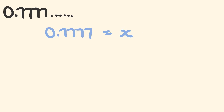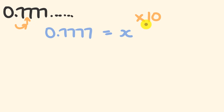The next thing we do is we look for where the first repeat occurs in our decimal. As you can see, the first repeat occurs between the first and the second seven — we have a seven, and then it repeats. We've had to move one decimal place to get to that spot. To move a decimal one place, we multiply by 10. So multiplying our equation by 10: 0.7777 times 10 is 7.777, and this is equal to 10x.